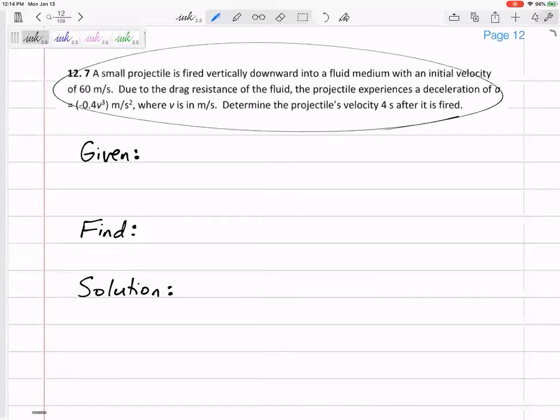You don't have to rewrite this whole thing in your given section. All you have to do is just write all the information. A small projectile fired vertically downward into a fluid medium with initial velocity.